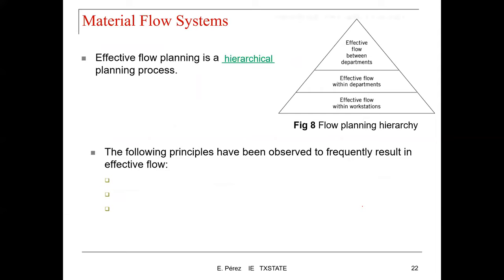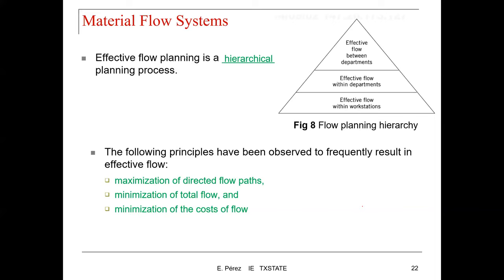Effective flow planning is a hierarchical planning process, illustrated in figure eight. We start from the bottom: first designing effective flow within workstations, then moving up to effective flow within departments. The following principles frequently result in effective flow: maximization of direct flow paths, minimization of total flow, and minimization of the cost of flow.